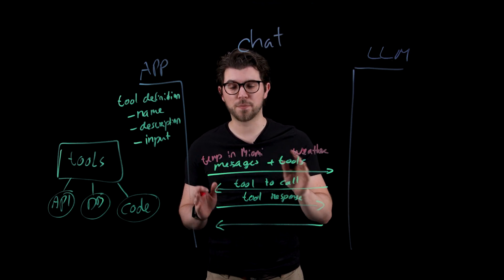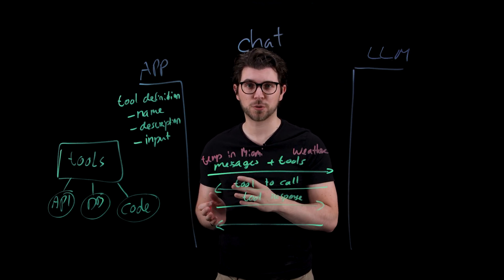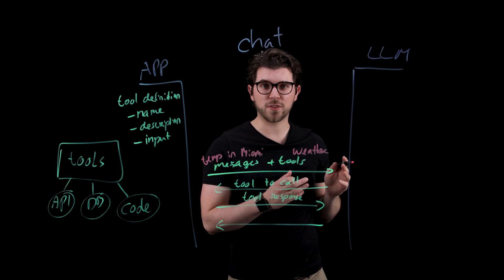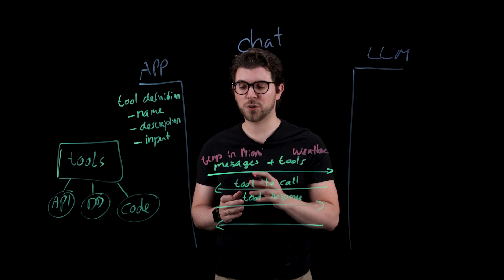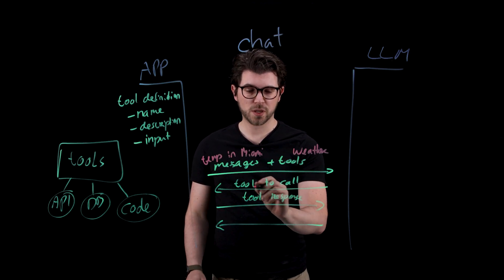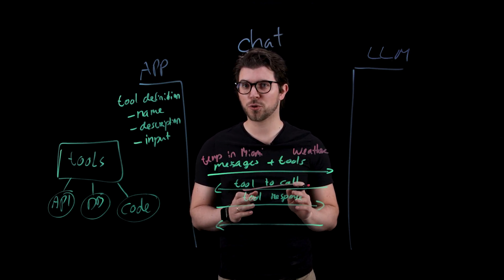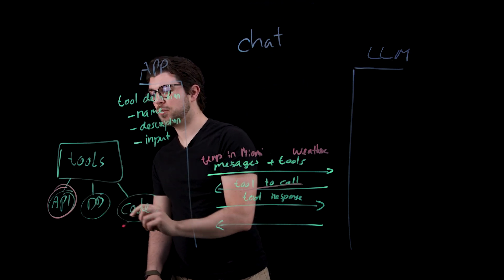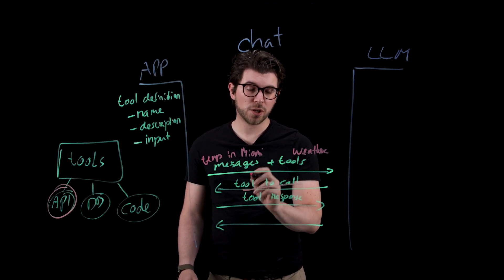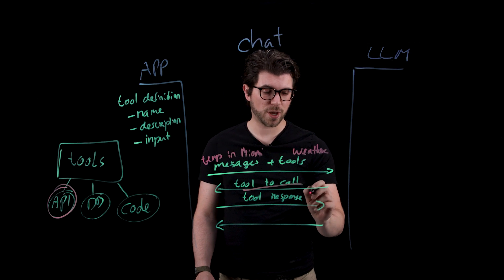The LLM will look at both your question, which is what is the temperature in Miami, and the weather API. Then based on the tool definition for the weather API it's going to tell you how to call the weather tool. So it's going to create a tool that you can use right here on this side where you call the API to collect the weather information. You would then supply the weather information back to the LLM.